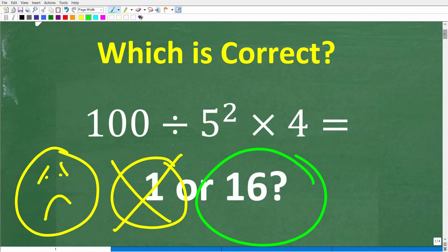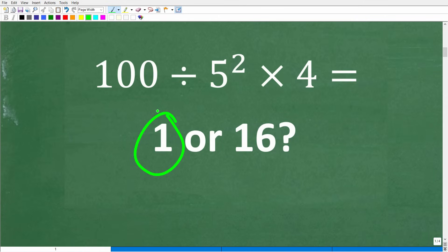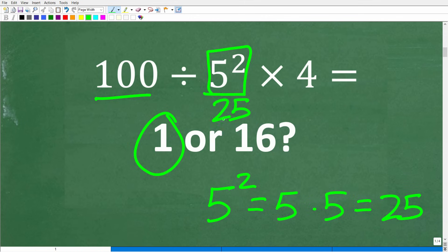Alright, so let's go ahead and get into the solution right now. And for those of you that answered 1, well, how did you do the problem? Well, you probably did this. You said, alright, well, I have 100 divided by 5 squared. So 5 squared means what? Well, 5 squared means take 5 and multiply it by itself. So 5 squared is 5 times 5 or 25. Alright, so that's very good. And it's actually correct. So we have 25 in terms of first step. So we have 100 divided by 25 times 4.